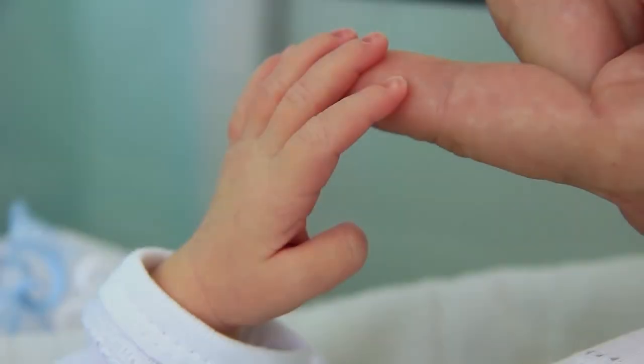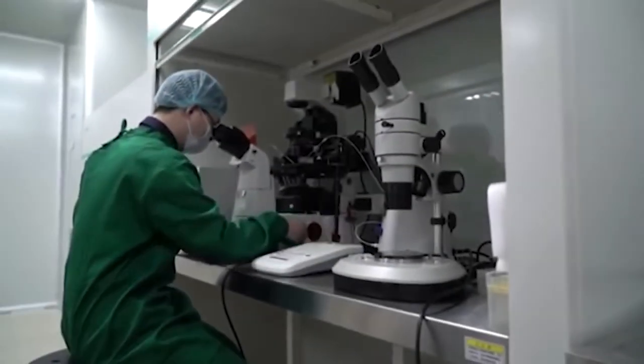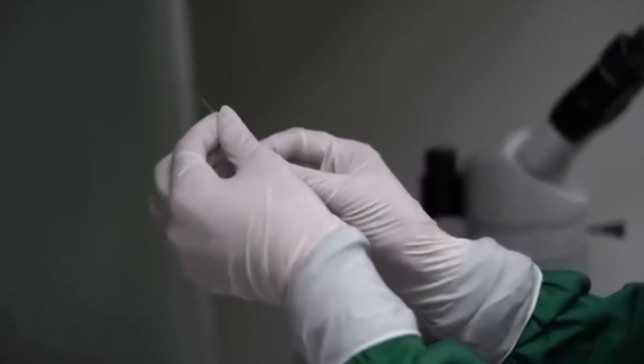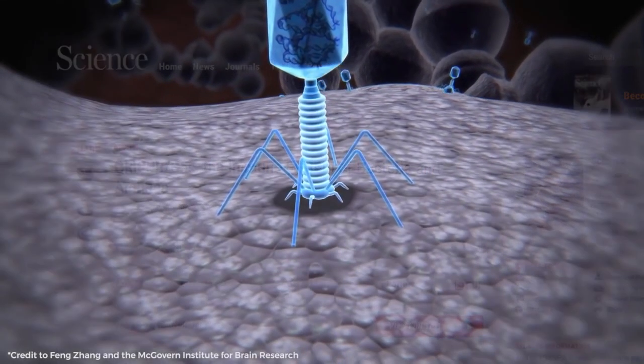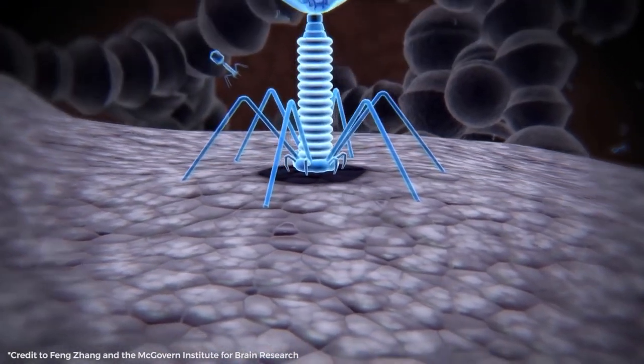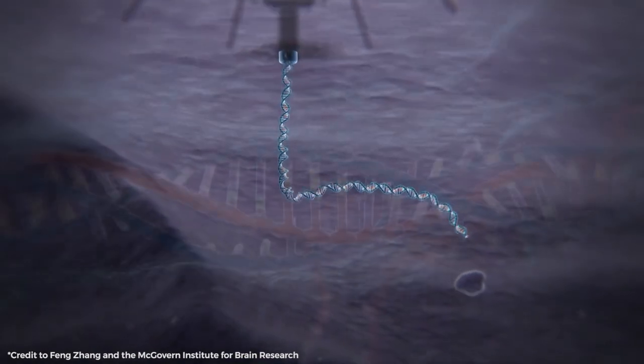CRISPR-Cas9 was developed from a naturally occurring genome editing mechanism that bacteria use as an immunological response. When a bacterium becomes infected with a virus, it targets tiny bits of the virus' DNA and inserts them into its own DNA in a specific manner to form parts referred to as CRISPR arrays.